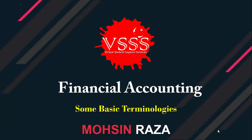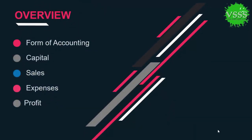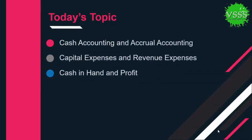Hello, I am here with another financial accounting class. We covered last time the forms of accounting and other basic concepts of financial accounting like capital, sales, expenses, and profit. Today we have talked about the difference between cash accounting and accrual accounting, the difference between capital expenses and revenue expenses, and lastly the difference between cash in hand and profit.